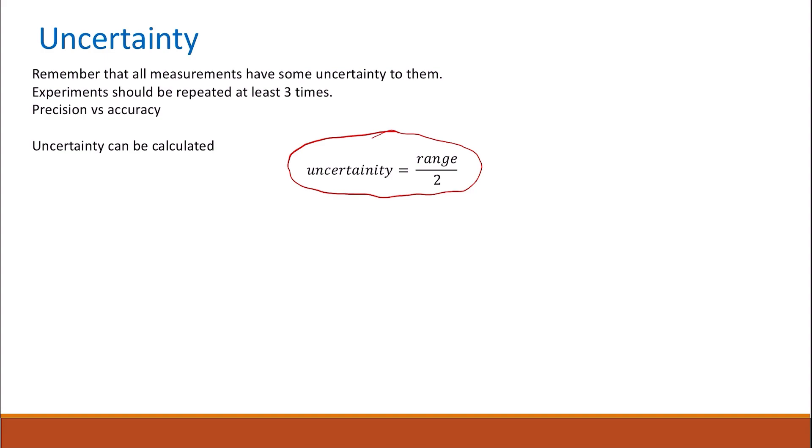When you get your results of the uncertainty, if you have a larger range, that means your results are less precise. So your values, the values that you get are far apart from each other, so they are less precise. And then, you have a larger value of uncertainty.